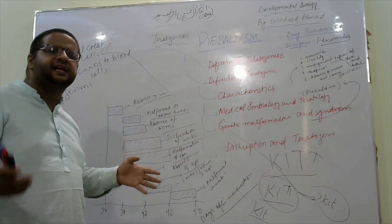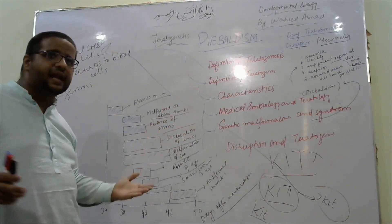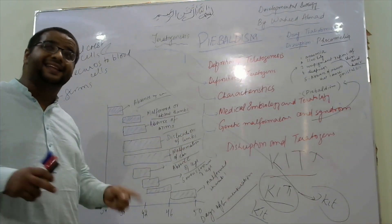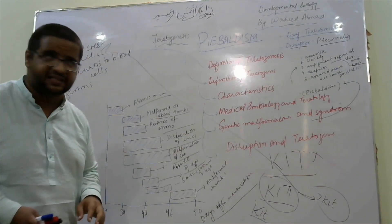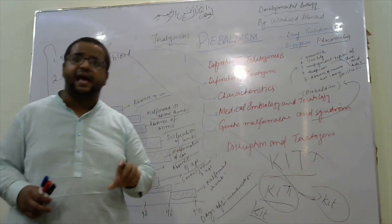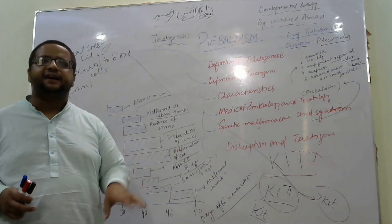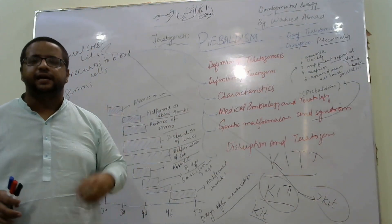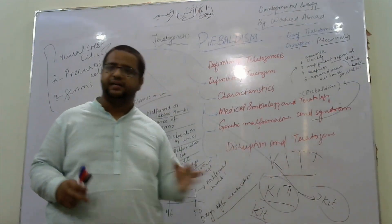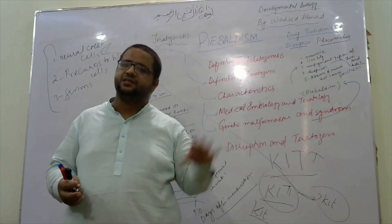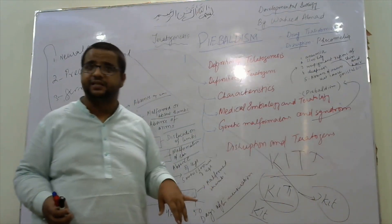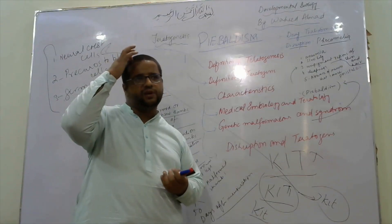Teratogenesis is basically the creation of monsters — an abnormal body is categorized under Teratogenesis. But there is environmental Teratogenesis as well. When caused by genetic factors, it is genetic malformation. When an environmental teratogen — any chemical or component of the environment — affects the developmental process and creates an abnormal organism, that is called a teratogen. Environmental teratogens cause disruption; these are not referred to as genetic malformations but as disruptions.